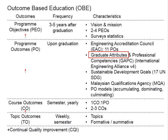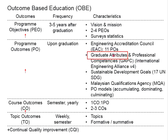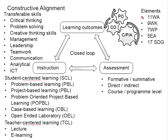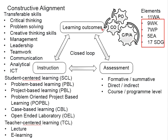There are 11 graduate attributes as listed in the IEA document version 4, which is the latest version currently. These 11 graduate attributes become the 11 program outcomes as adopted by the Engineering Accreditation Council, EAC. In the process of meeting these graduate attributes, IEA also specifies the elements leading to them: 9 knowledge profiles, 7 complex engineering problem solving, 5 complex engineering activities, and 17 sustainable development goals.